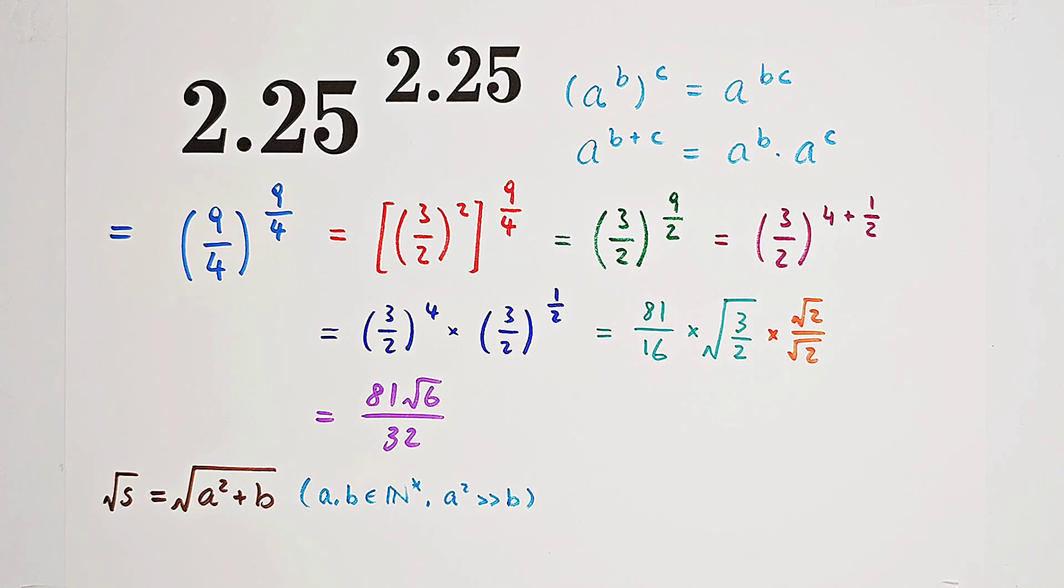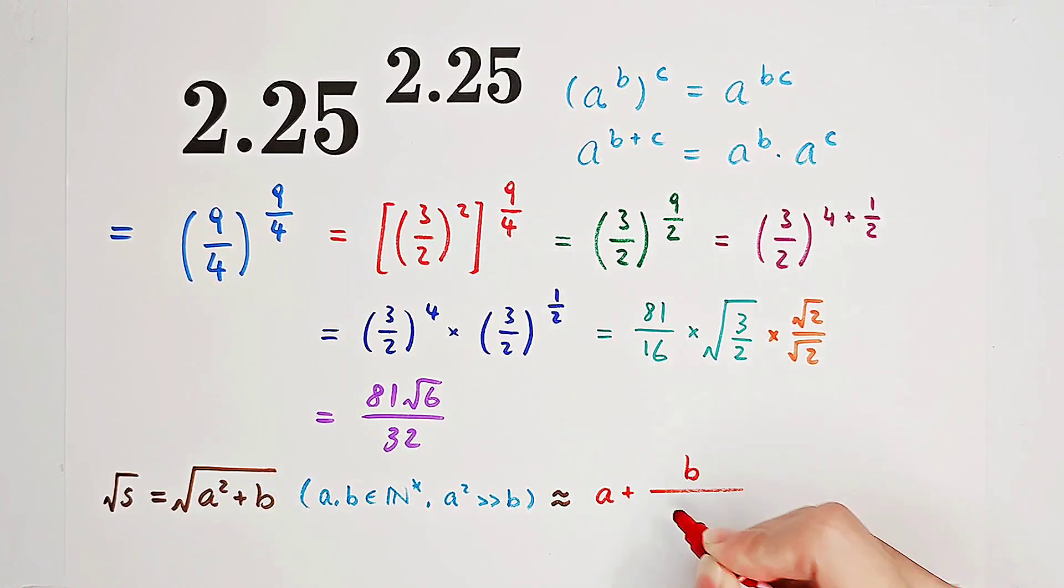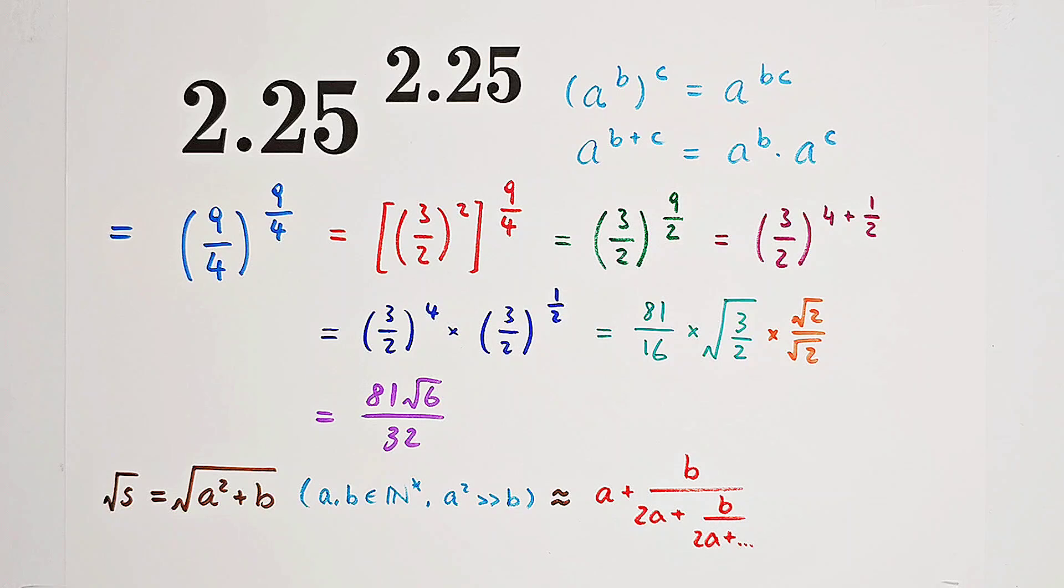And now, it's approximately equal to a plus b over 2a plus b over 2a plus... There are infinity fractional lines.